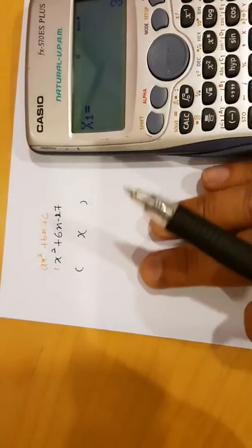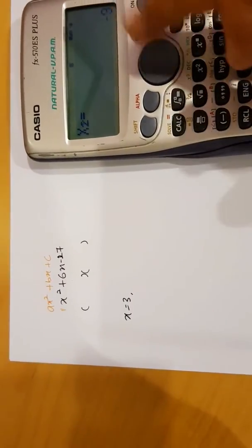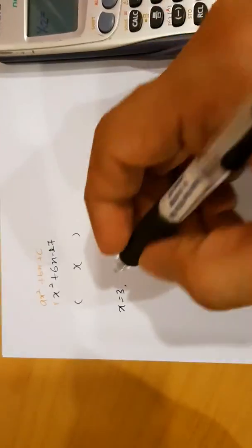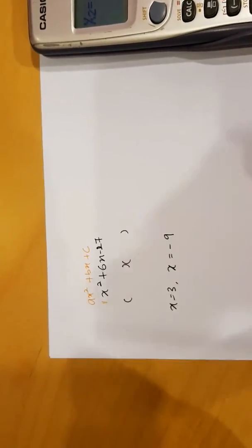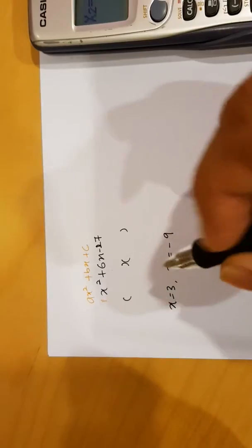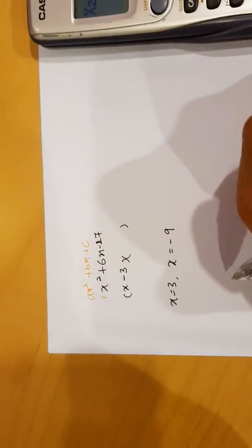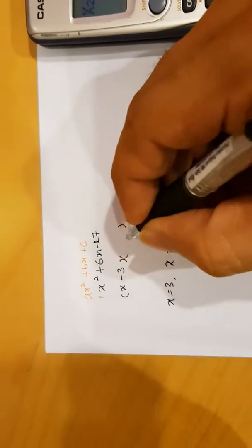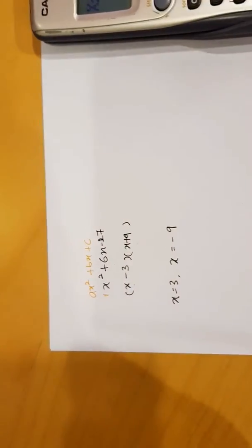What the calculator does is it gives us the two answers or solution for this quadratic equation. First number is 3, so that means X number equal to 3 and the other X number we got is negative 9. To put that into the bracket, this is positive 3, so in the bracket becomes X minus 3. We just reverse the value. This is X negative 9, so in the bracket becomes X plus 9. Those two are the factors for this question.